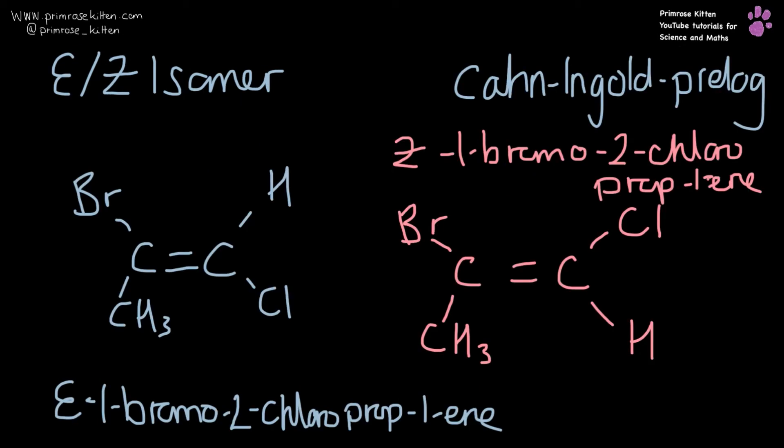So here is a similar but slightly different example because I've moved the chlorine over. Here we can see that our two highest priority groups, our bromine and our chlorine, are on opposite sides of the double bond. So this is the E isomer. And here they are on the same side of the double bond. So this is our Z isomer.